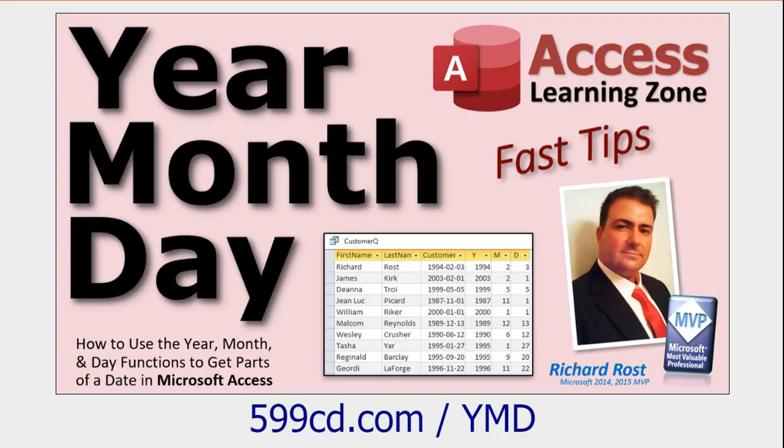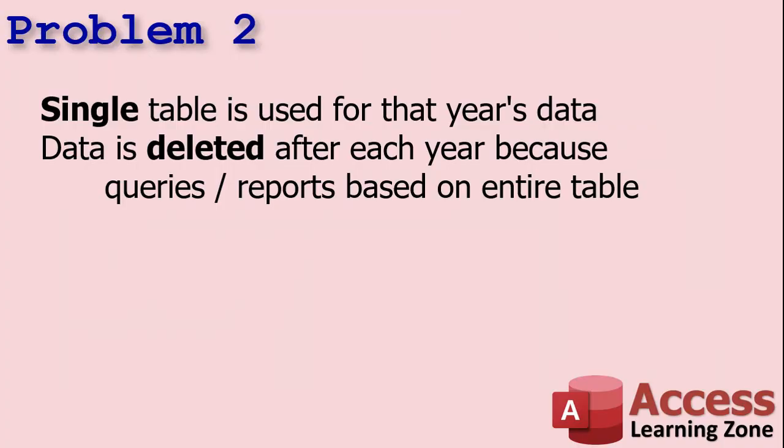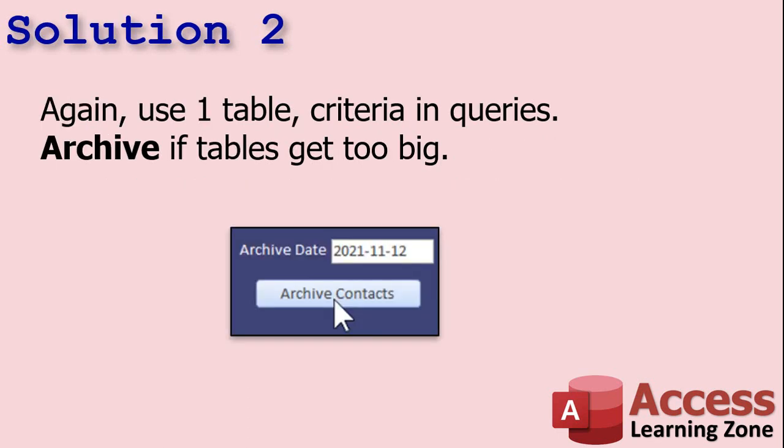Problem two is very similar to problem one, but instead of having different year-based tables they copy the whole database and set it aside — 2022 is done, so they set that one aside. Now the whole database has all the data for that year, and all the queries and reports are based on that entire table. So when they try to add records for 2023, the queries and reports are all wrong because it's going to show more than just that year's data.